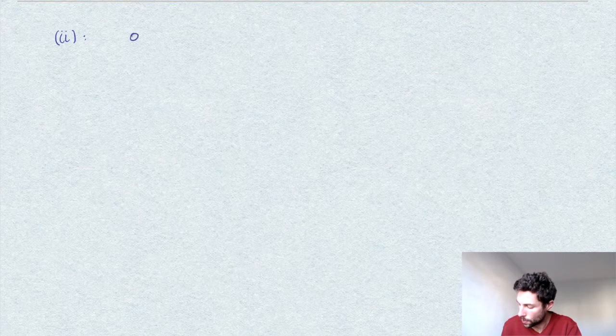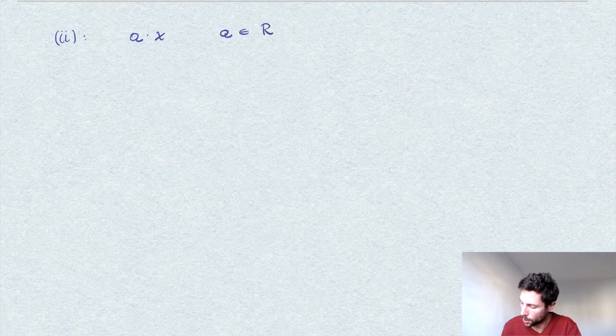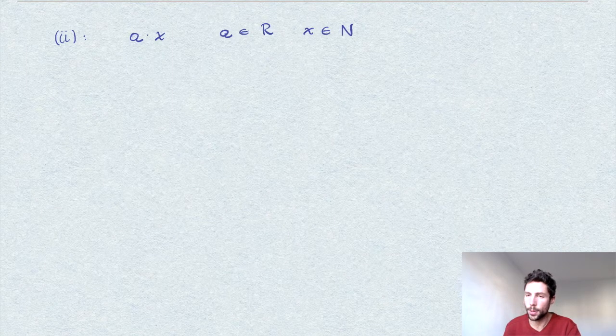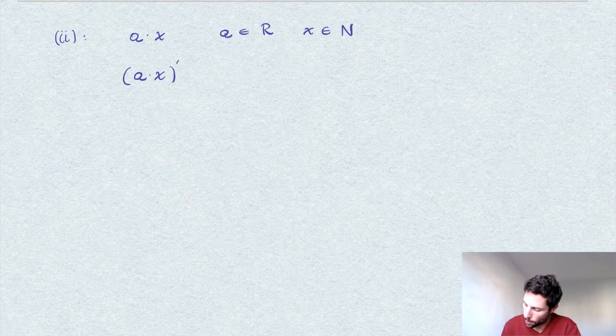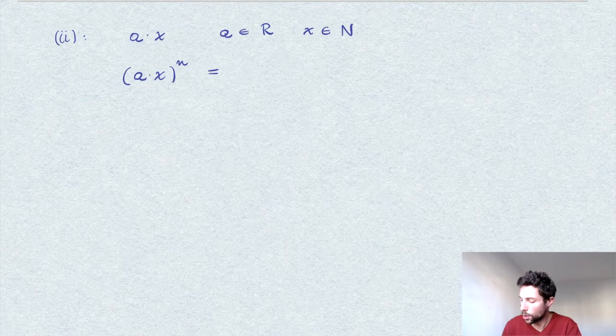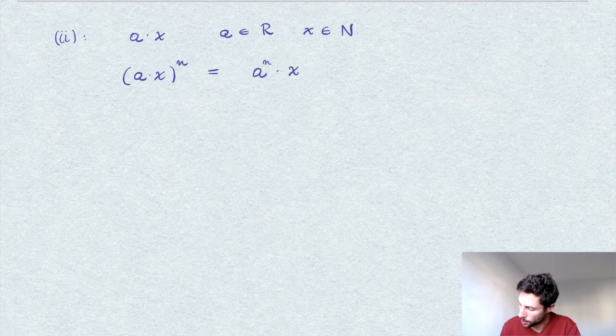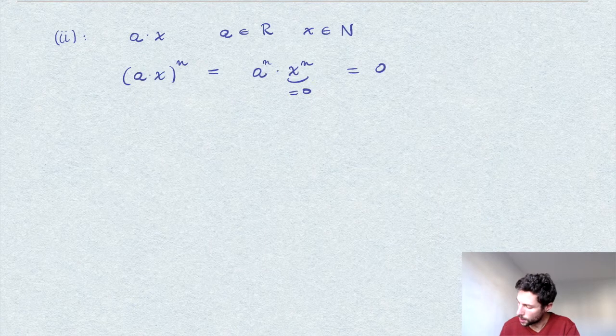Let's start with the easier one, which is part two. Take a times x where a is any element of the ring and x is nilpotent. We want to show that a times x is still in N. We need to provide some power for which this is zero. I'll take the same power n for which x to the n equals zero. Because the ring is commutative, (ax)^n can be written as a^n times x^n, which equals zero.